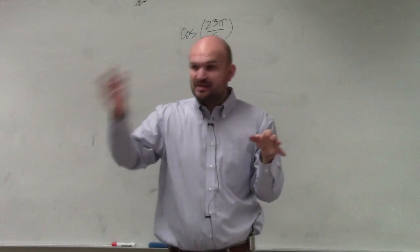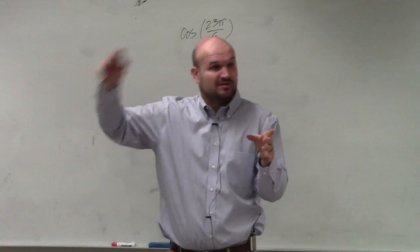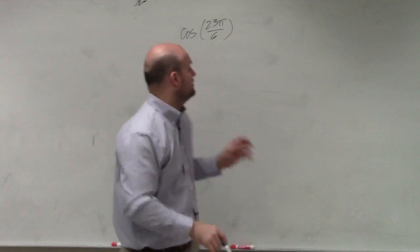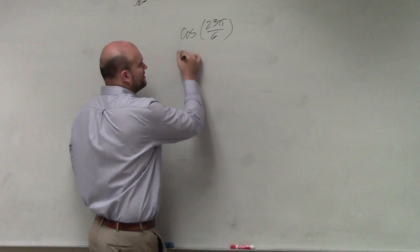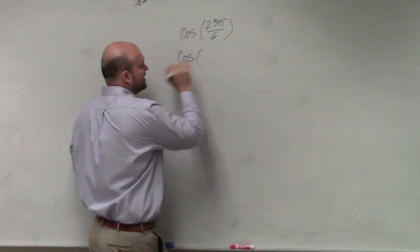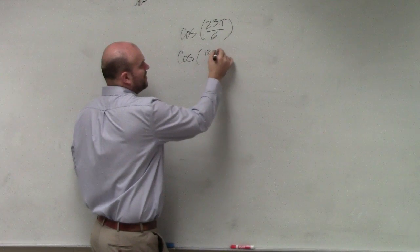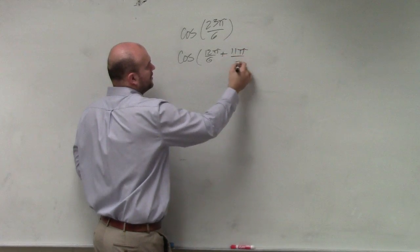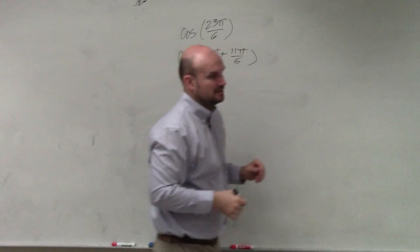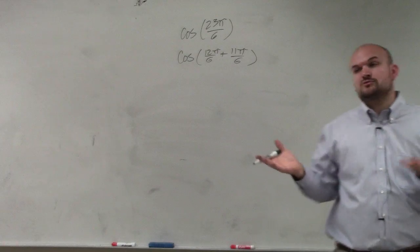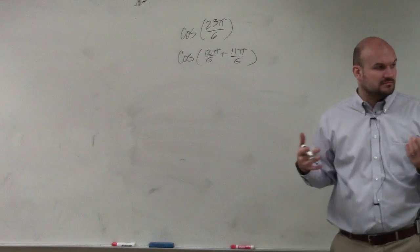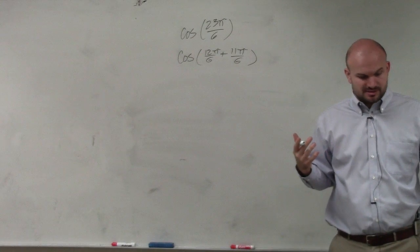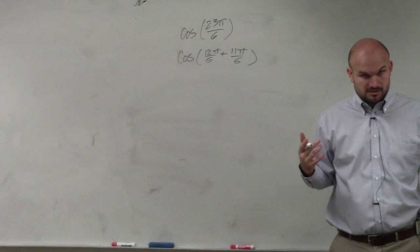So we know that this is going to be like a big angle. This is like going around the circle over once. So what I can do is I can rewrite this to cosine of 12π/6 plus 11π/6. Would you guys agree with me? 12π/6 and 11π/6 is the same thing as 23π/6. Right?